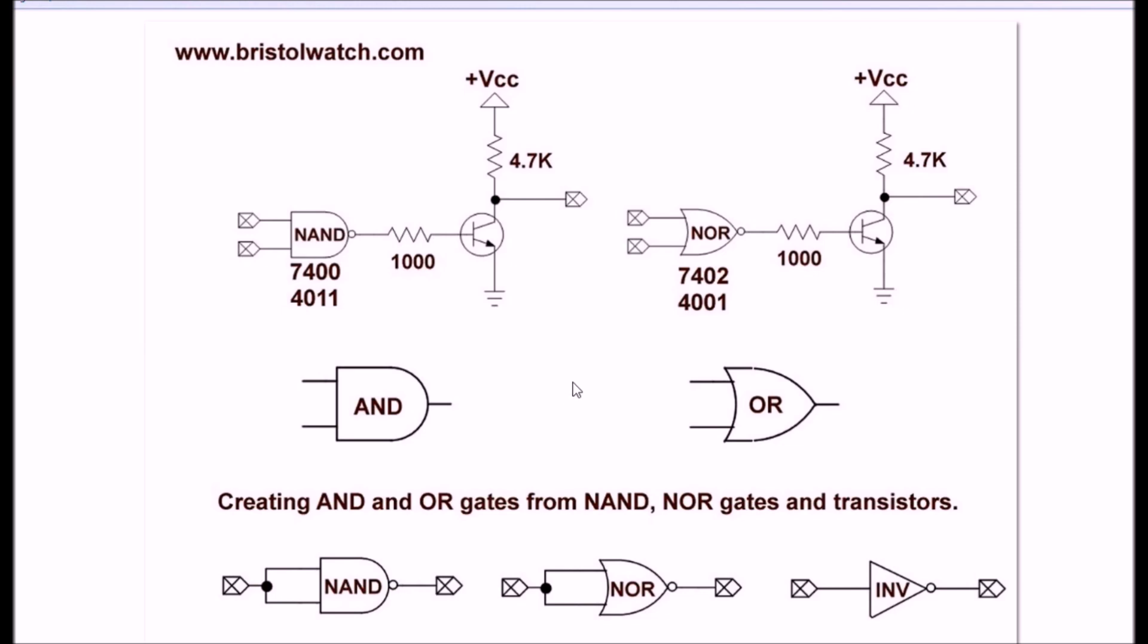Okay, what if you needed an open collector AND or OR gate? You could take a NAND gate through a resistor, an NPN transistor with a pull-up resistor to VCC or 5 volts or whatever you need. This circuit here forms an AND gate for you just like that. If you need an OR gate and not a NOR gate, you can do the same thing as illustrated there.